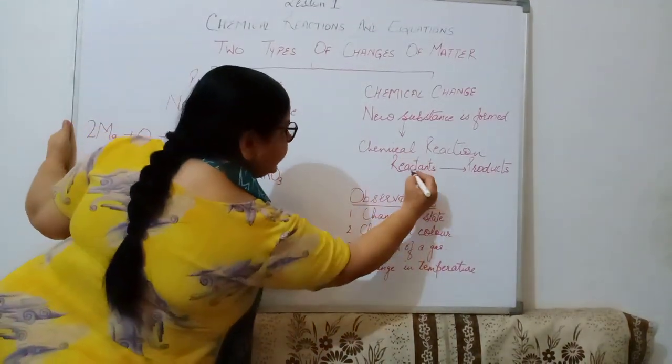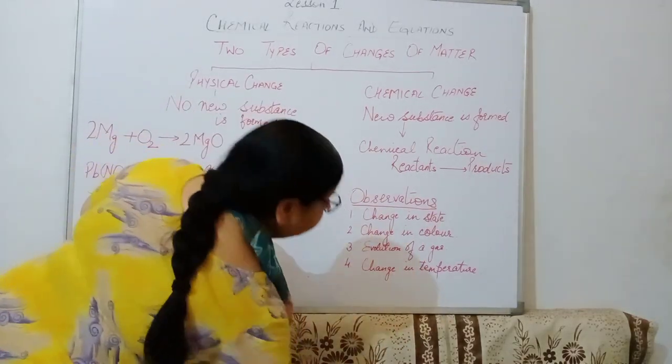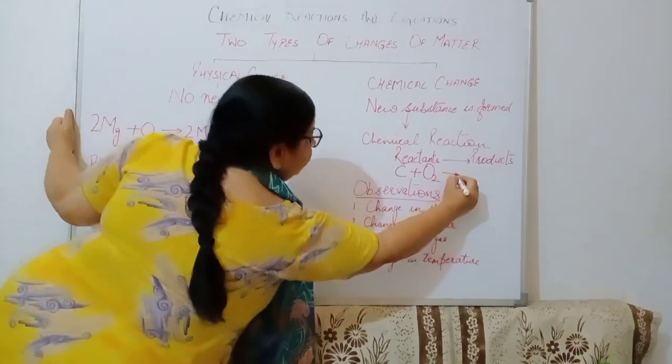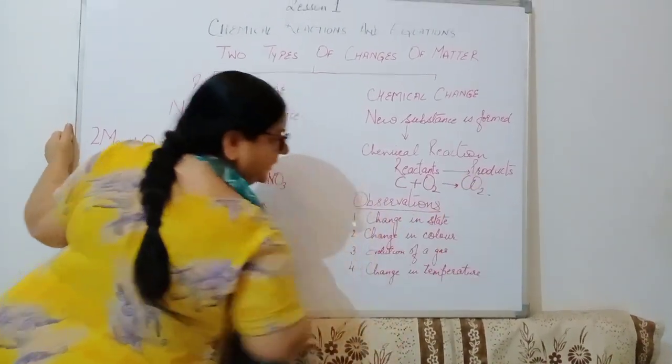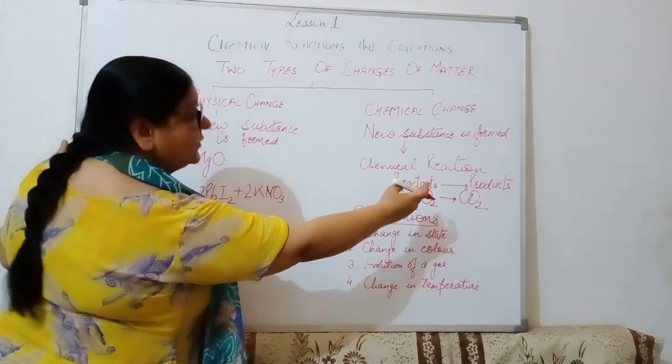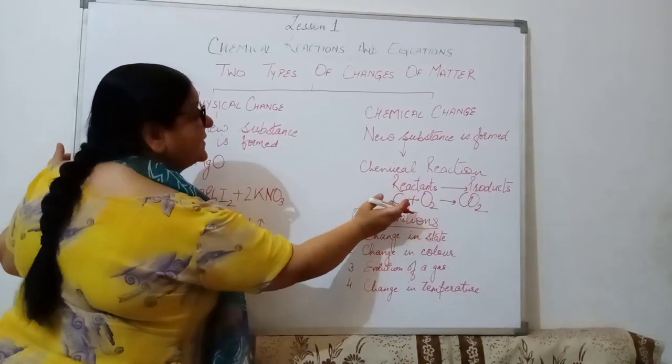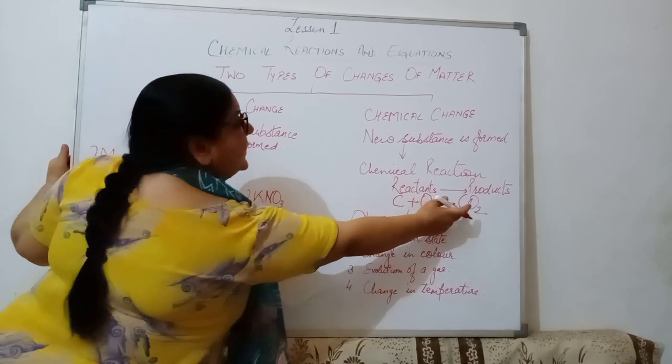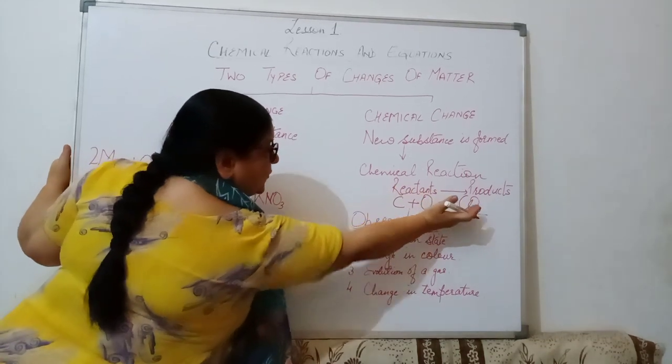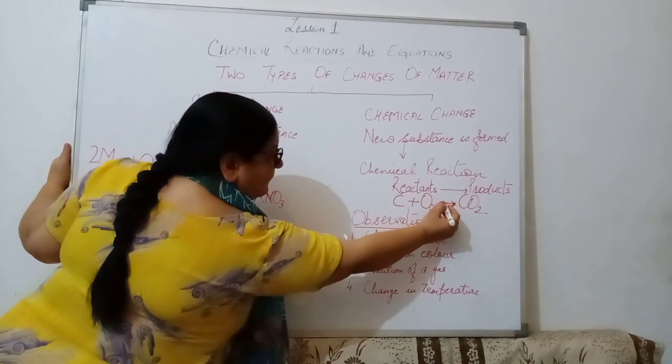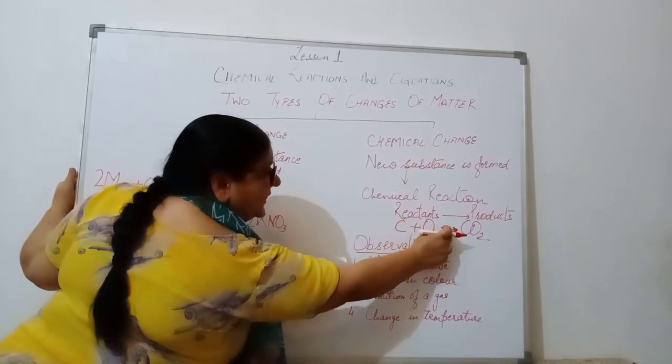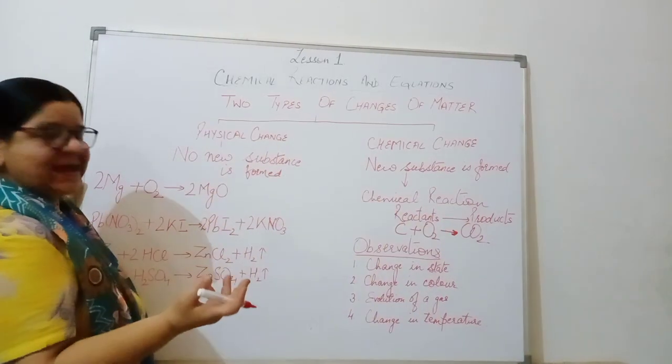Suppose any example we take like carbon, it reacts with oxygen to form carbon dioxide. So when there are two reactants, whenever there are two reactants, more than two reactants, we put a plus sign in between. That is carbon plus oxygen gives a product that is carbon dioxide. And to show the reactant and the product, there is an arrow in between. We always put an arrow in between. It is read as carbon plus oxygen gives CO2. This arrow will be read as gives.